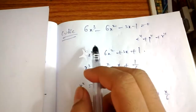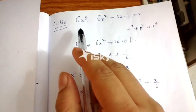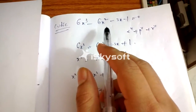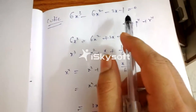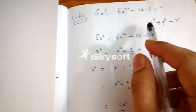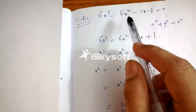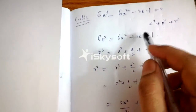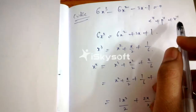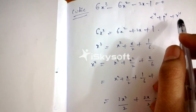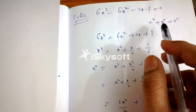This is a very interesting problem. We have a cubic equation 6x³ minus 6x² minus 3x minus 1 equal to 0. Suppose alpha, beta, gamma are the roots of this equation. We need to find the value of alpha⁴ plus beta⁴ plus gamma⁴.